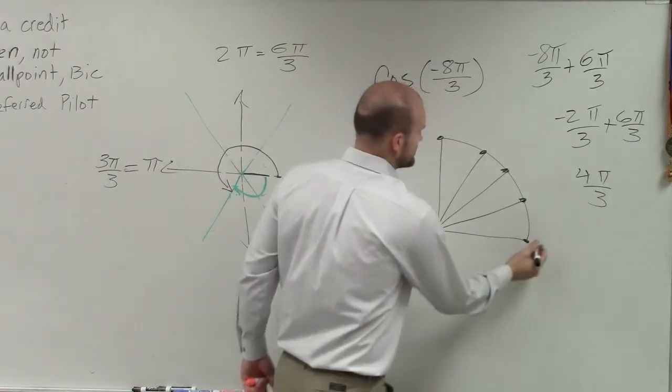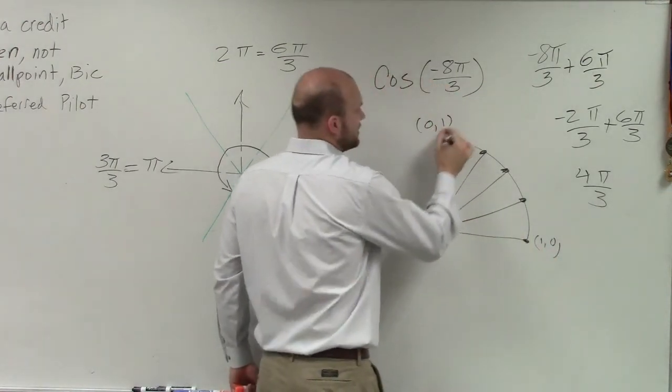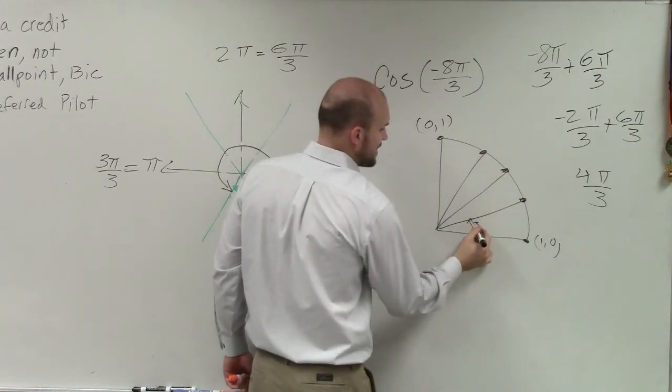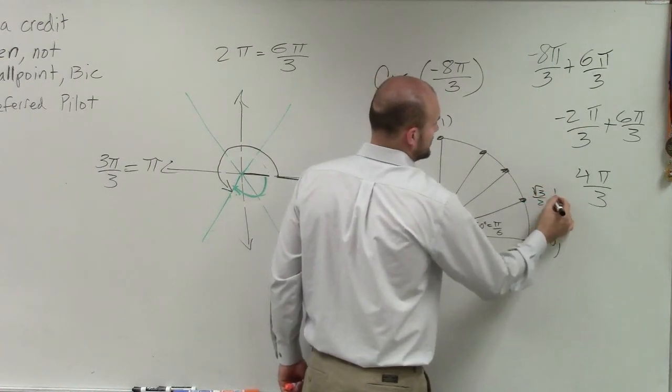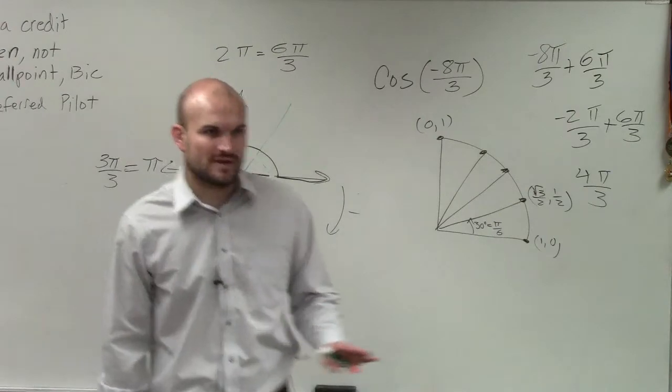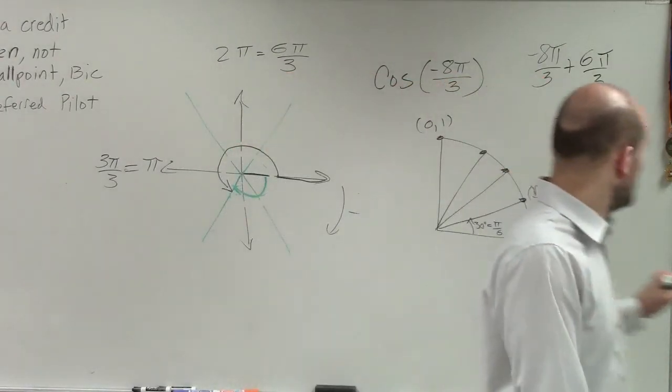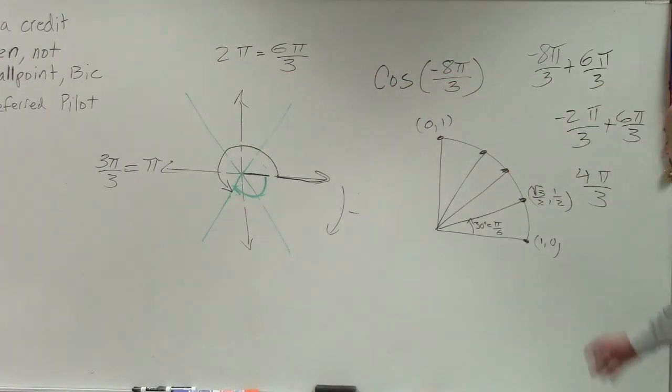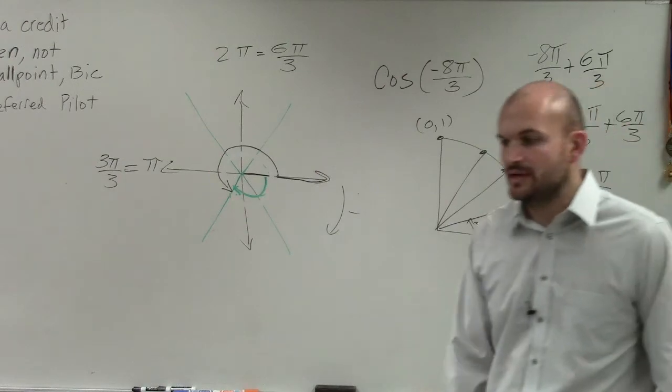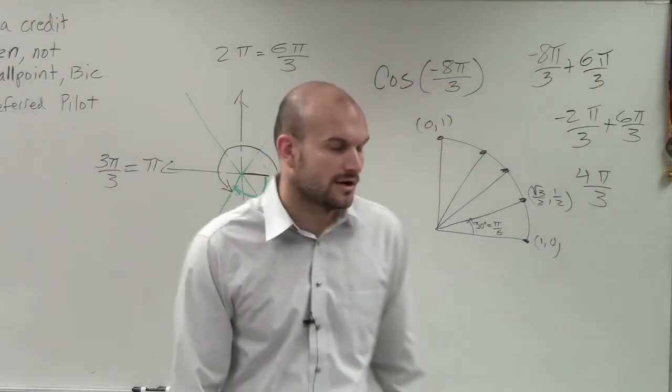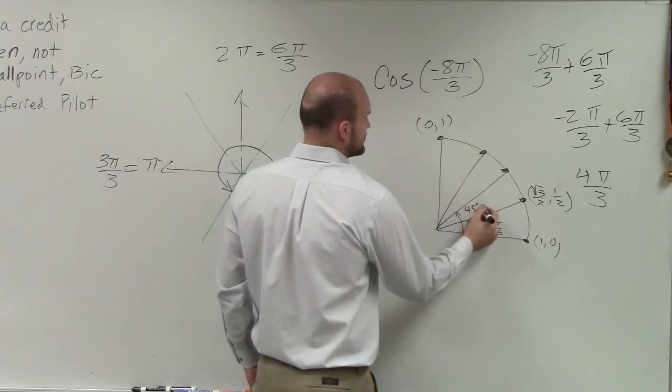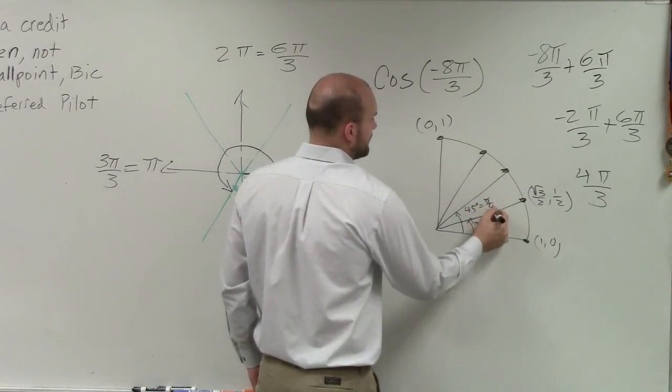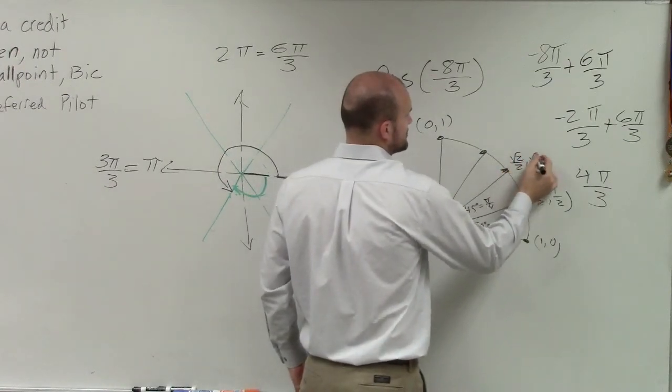So the points, the major points on our unit circle are 1, 0, and 0, 1. This first point, which is at 30 degrees, which is equivalent to π over 6 radians, is square root of 3 over 2 comma 1 half. So when you have an angle that intersects the unit circle at 30 degrees or π over 6, that's going to be your coordinate point. Then we have the next angle, which is 45 degrees, which is equivalent to π fourths. That's going to be the square root of 2 over 2 comma square root of 2 over 2.